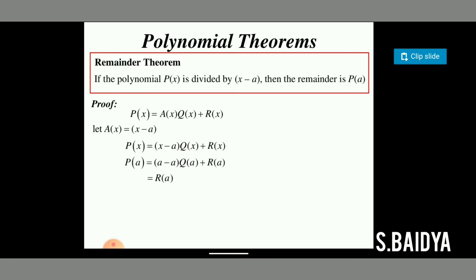Now, the degree of r(x) is less than 1 because the divisor x minus a is a linear polynomial of degree 1, so the degree of the remainder must be less than the degree of the divisor. Since the degree of r(x) is less than 1, r(x) is a constant. Therefore, when p(x) is divided by x minus a, the remainder equals p(a). Hence the theorem follows.